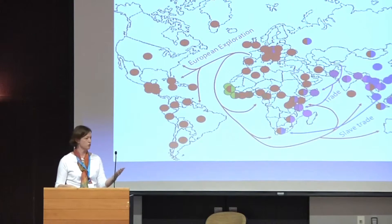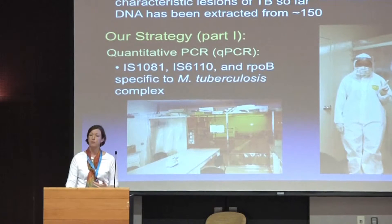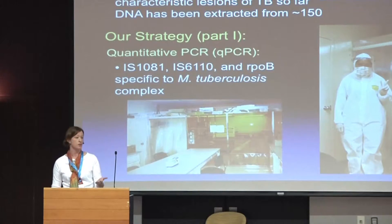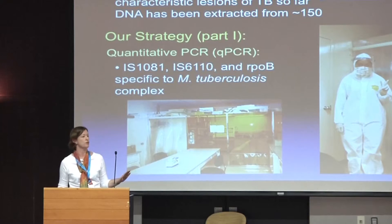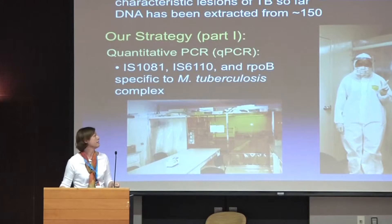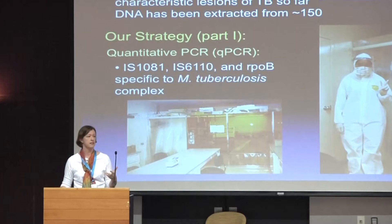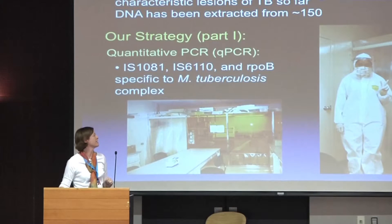So what we've done is sampled skeletal remains with evidence of tuberculosis — these have very characteristic lesions. Keep in mind that the vast majority of people who develop tuberculosis never develop skeletal lesions, so these are people who have survived with the disease chronically for a long time. Then we grind up bone and extract DNA. We have a clean room here at ASU that's a Class 10,000 clean room. My grad students have to constantly shower and wear full garb — they're a very squeaky clean bunch — and we work under these conditions to really reduce the possibility of contamination.